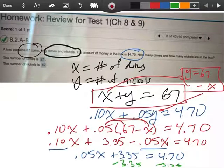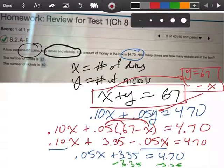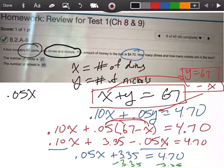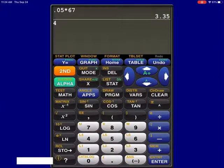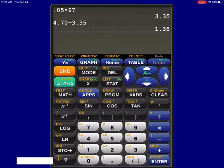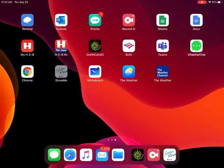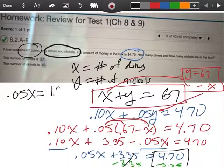I'm kind of running out of room here, but we'll figure it out. Let me get my black pen going again. So now I'm going to have 0.05x equals, those are going to cancel. So let me subtract these 4.70 minus 3.35 is $1.35. So I have $1.35.